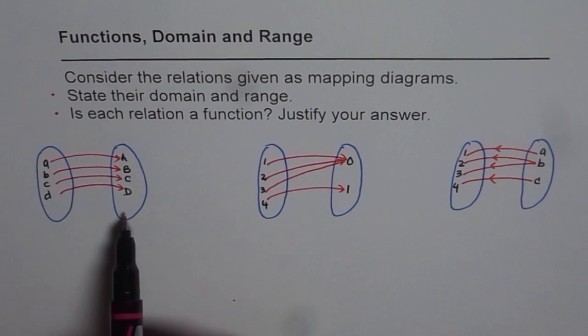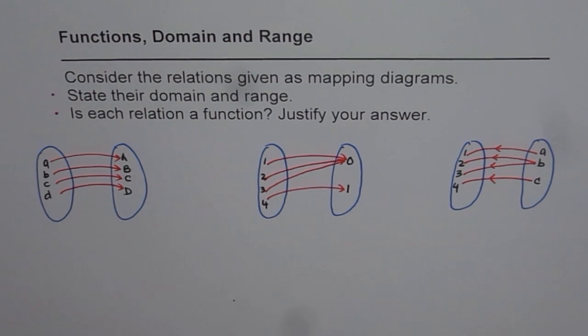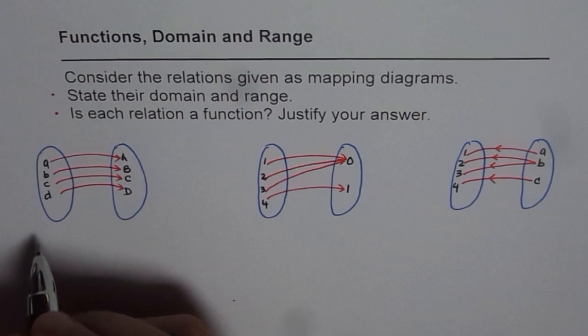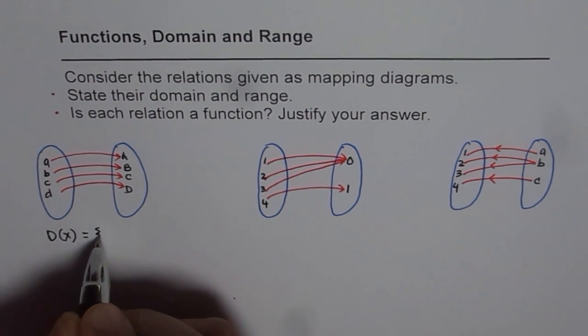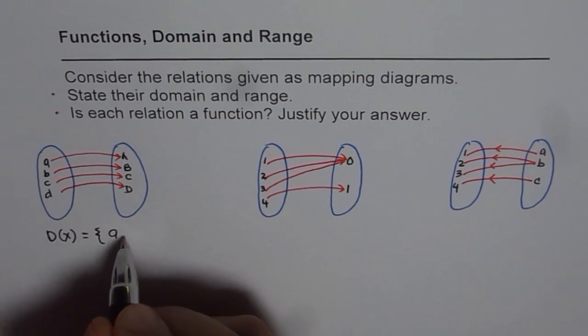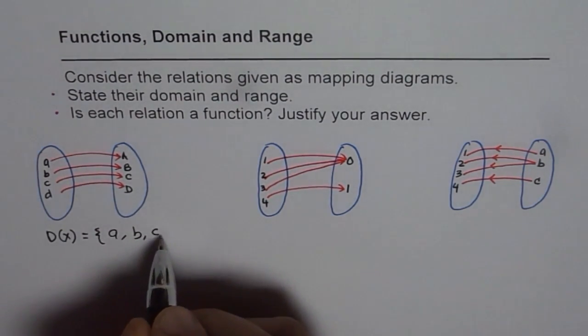And the second group is the set of dependent variables, which is the range for us. Now when we say domain and range, then domain is we are writing the x values as equals to a, b, c, d. So that is the domain for us.